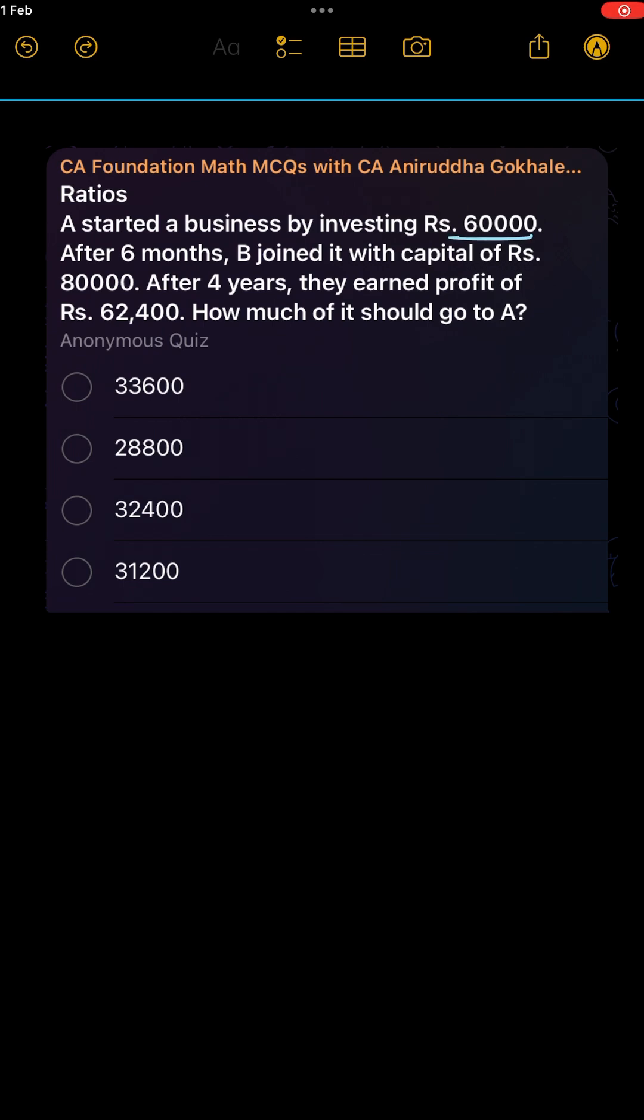A started a business by investing 60,000 rupees. After 6 months, B joined with capital of 80,000. After 4 years they earned profit of 62,400. How much of it should go to A?